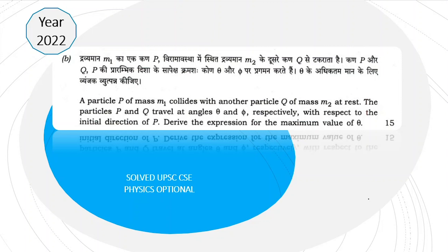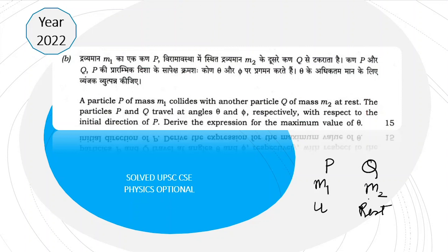Hello everyone, we are here with another question from the 2022 Physics Optional Paper 1. In this question we are given two particles, particle P and Q, with different masses m1 and m2. Particle P of mass m1 collides with another particle Q of mass m2 at rest. Let the initial velocity of particle P be u. The particles P and Q travel at angles theta and phi respectively with respect to the initial direction.